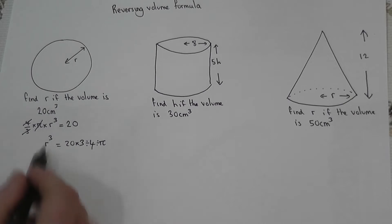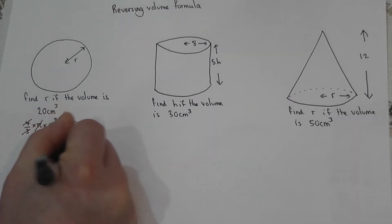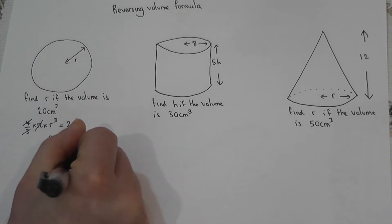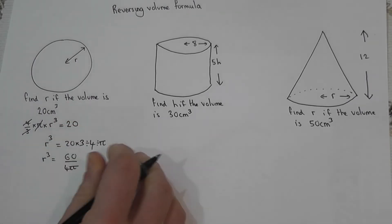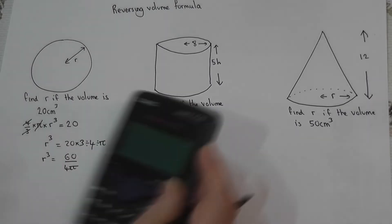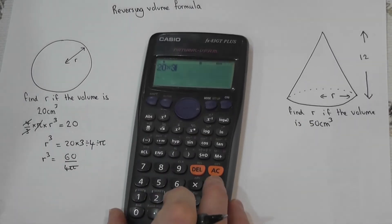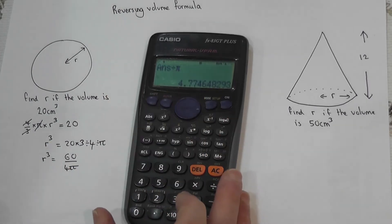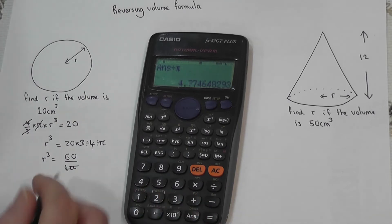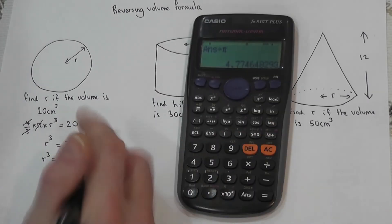I can then work this out. By the way, this is the same as 20 times 3 is 60 over 4 pi. On my calculator I can enter 20 times by 3 divided by 4 divided by pi, or 60 over 4 pi, and this works out to be 4.77.